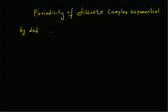By definition, a complex exponential will be periodic — that is, e^(jω₀(n+N)) = e^(jω₀n). That is the definition of periodicity for a discrete complex exponential.